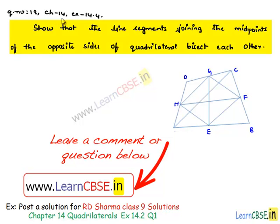Let us discuss question number 19 from Chapter 14, Exercise 14.4. Show that the line segments joining the midpoints of opposite sides of a quadrilateral bisect each other.